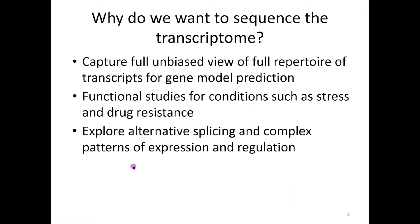We can think briefly about why we want to sequence the transcriptome. Often people say straight away 'differential expression,' and that's captured in functional studies for conditions such as stress or drug resistance. But there are other things you can do with RNA sequencing too. One is that it's important for gene model prediction: you can capture a full unbiased repertoire of all transcripts in the genome, and use that information to decide where genes are, including where introns, exons and UTRs are. You can also explore alternative splicing and more complex patterns of expression and regulation.